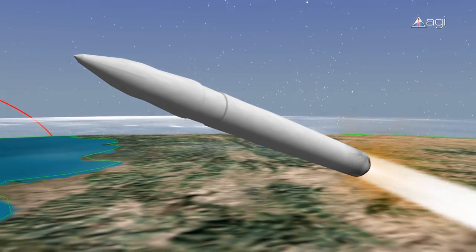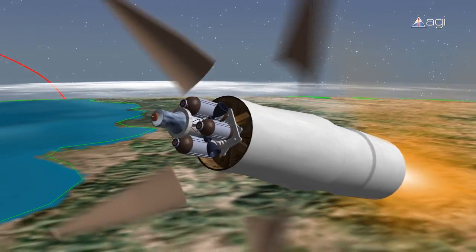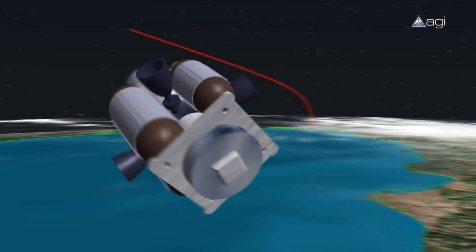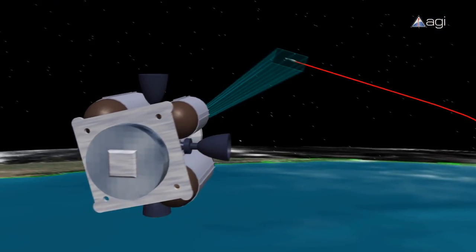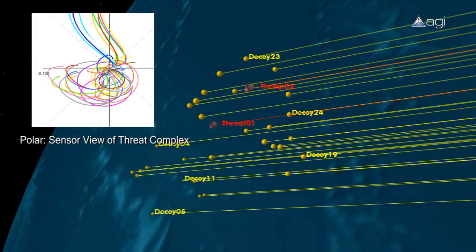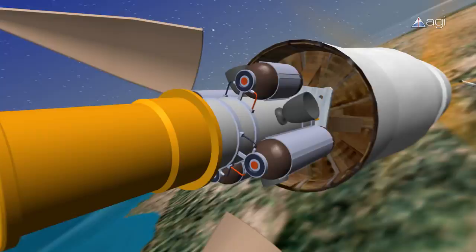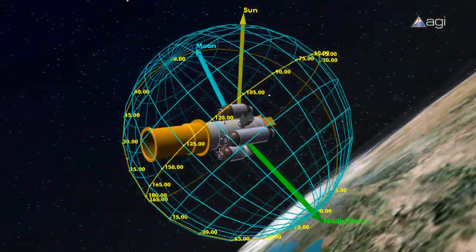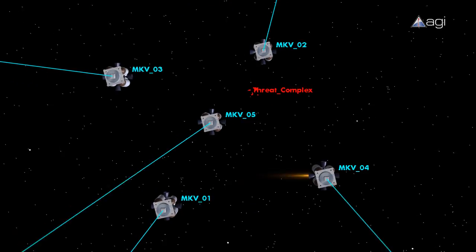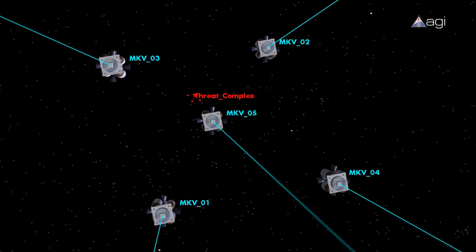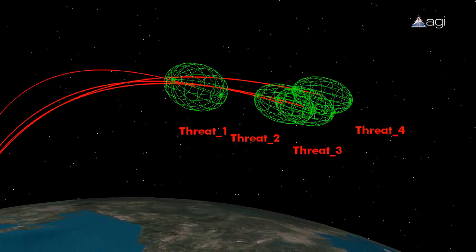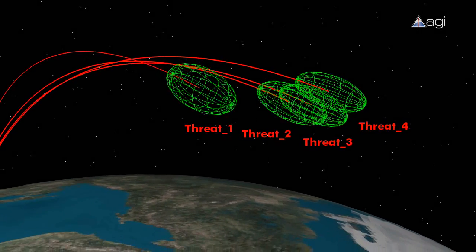While missile intercept for boost phase engagements can be simulated by multistage interceptors with kill vehicles, our software can also model mid-course and terminal engagement characteristics, including the ability to export geometry for discrimination analysis, plan payload deployment with complex attitude dynamics, visually compare real-time status to predicted performance, simulate multiple kill vehicles using intercept targeting and precision maneuver planning, and calculate trajectory uncertainty for kill probability analysis.